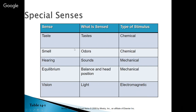Moving to our special senses: we have taste — sensed as tastes, which is a chemical stimulus. We have smell — sensed as odors, also chemical. Hearing and equilibrium — sounds versus balance and head position — are both mechanical stimuli. And vision senses light and is an electromagnetic stimulus.